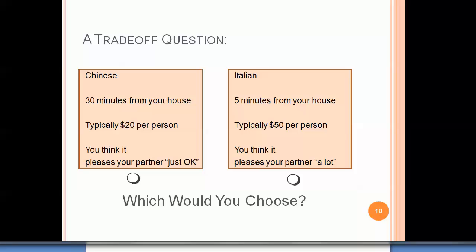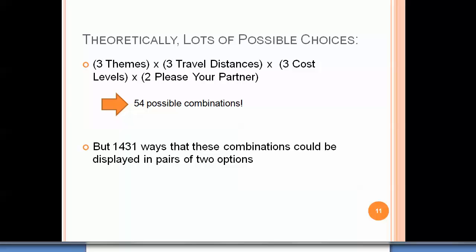We could ask you in a survey which of those two you'd prefer, and continue asking about different combinations. In this simple example there are three cuisine types, three travel distances, three cost levels, and two levels of partner satisfaction — giving 54 possible combinations, and 1,431 ways those could be displayed as pairs. More complex decisions lead to thousands or millions of possible combinations.